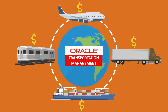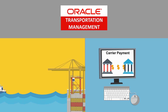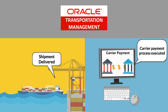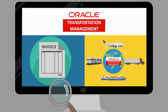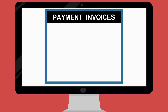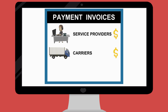The OTN Freight Payment Process facilitates the carrier payment process after shipments are executed and delivered. Payment invoices are used in OTN as the basis for payment of transportation costs related to a buy shipment. Payment invoices document the payments owed to service providers, carriers, and other parties.